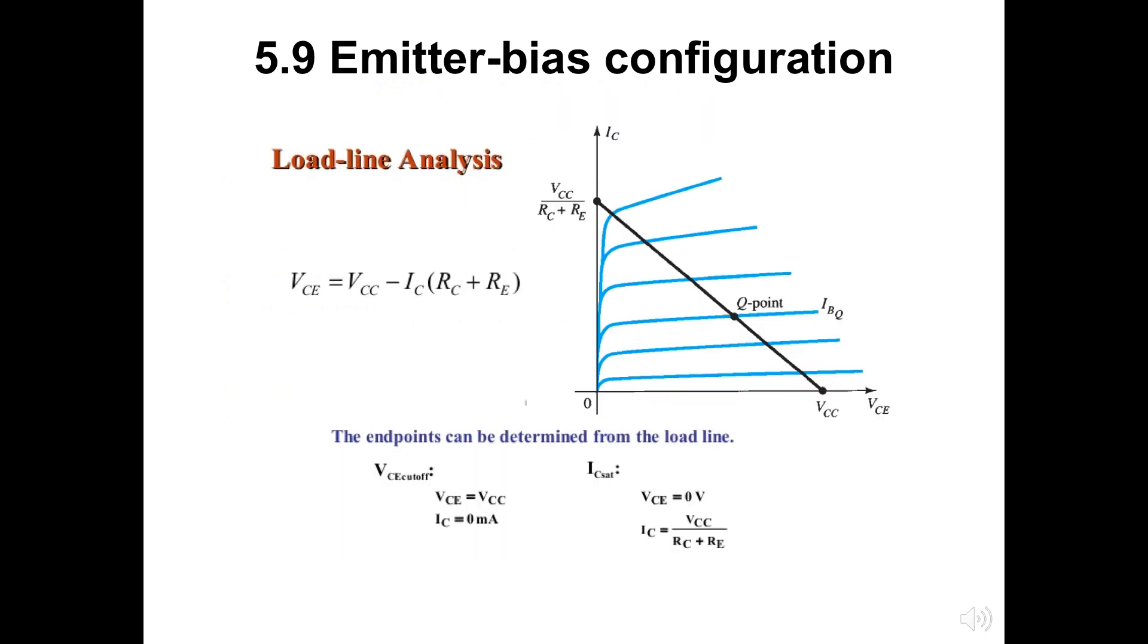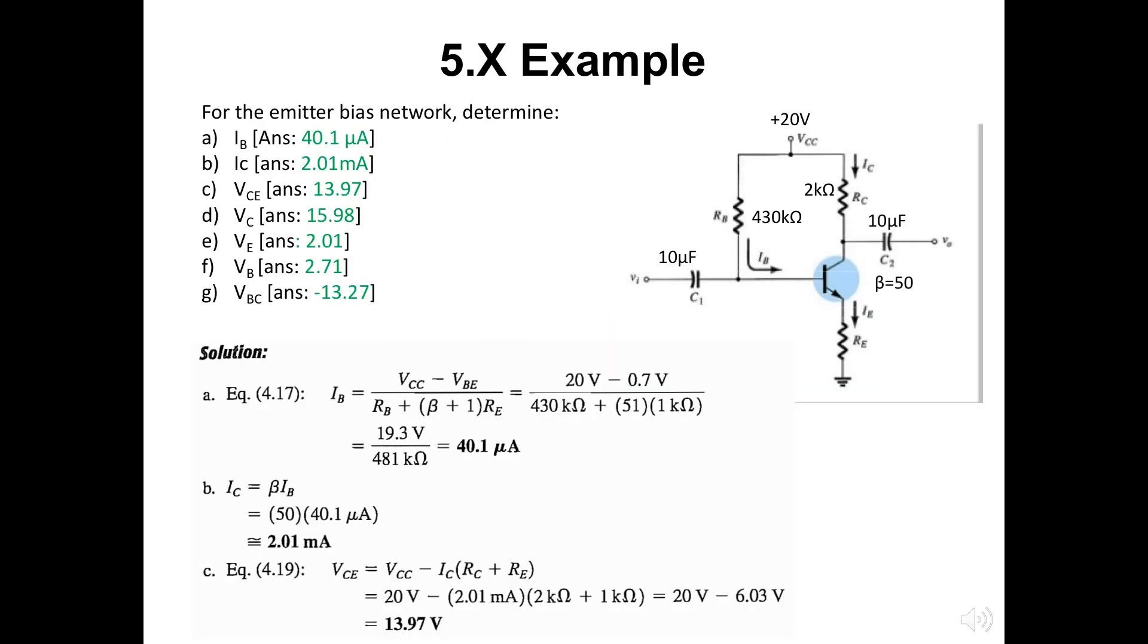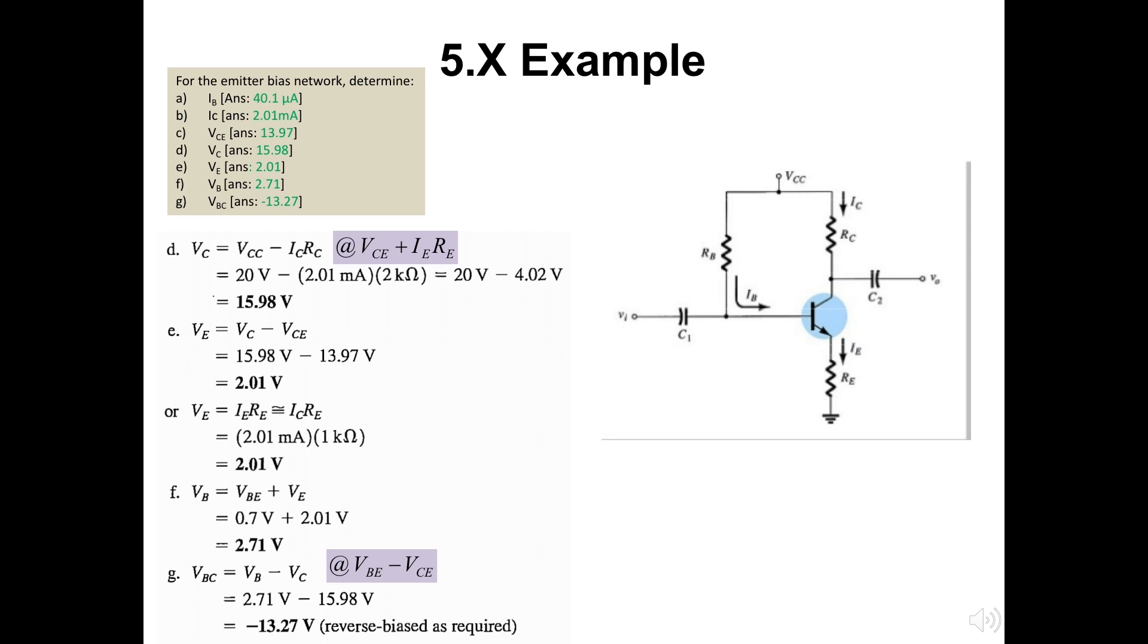This 24th slide refers to the DC load line for the emitter bias configuration. IC is equal to VCC by RC plus RE with VCE is 0V. In this slide and the next one, we will have the example. I think all of you can have your own time to solve it later as the proposed solution is given here.